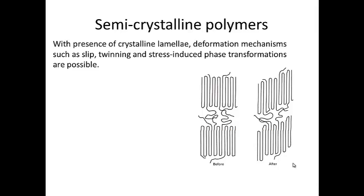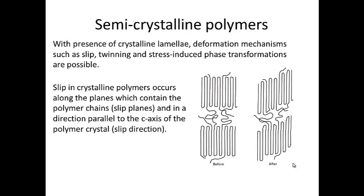Semicrystalline polymers are a little bit different. Deformation mechanisms such as slip, twinning, and stress-induced phase transformations are possible, but they're still not as prevalent as we see them in metals. Slip in crystalline polymers occurs along the planes which contain the polymer chains, or slip planes, and in a direction parallel to the c-axis of the polymer crystal, or the slip direction.